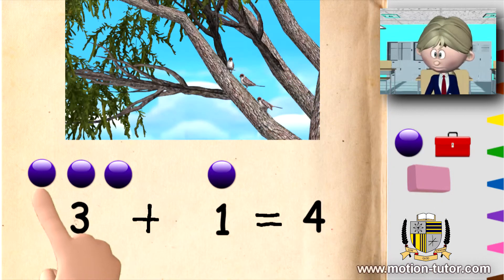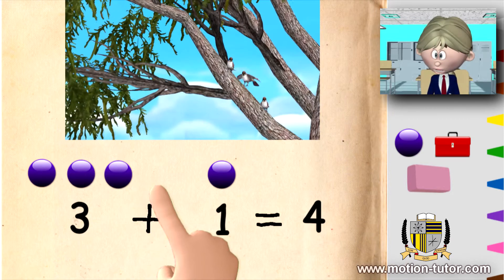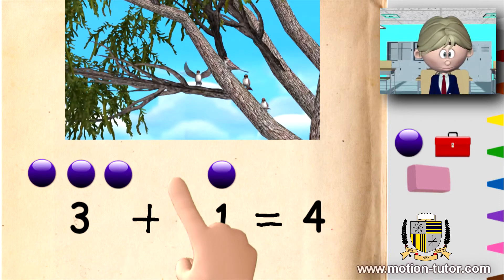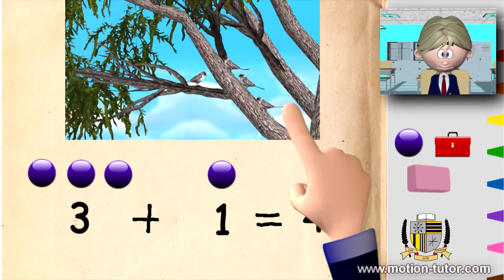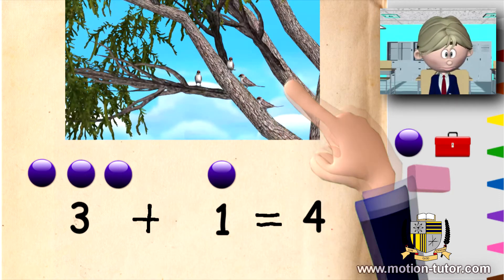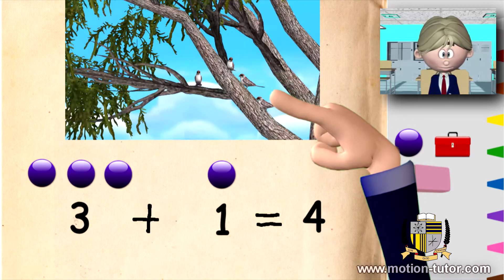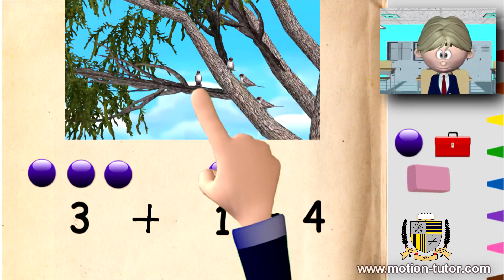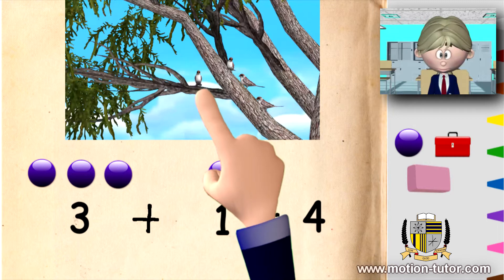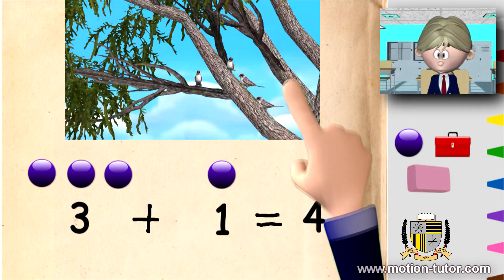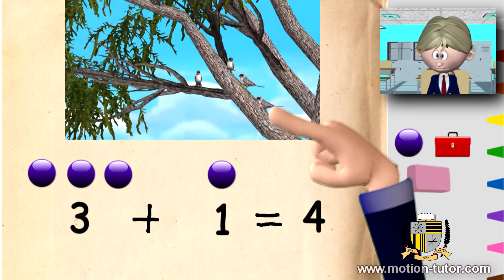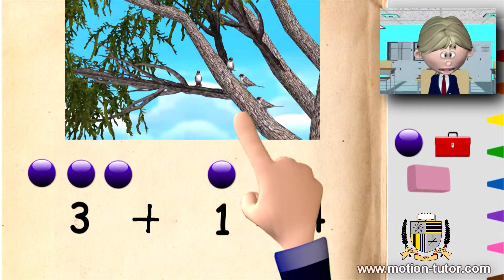Just like we have one, two, three here. And what happens when another bird joins them? Now we have one, two, three, and four. One, two, three, four. Four birds.